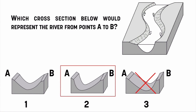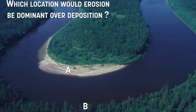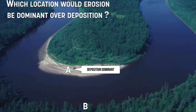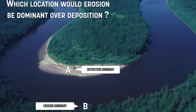Choice two is correct. There's more erosion going on at A, so that side has a much steeper channel. There's more deposition going on closer to B, so you have a much more gradual rise from deposited material. In the next example, erosion is more dominant at B because it's on the outside of the curve and the water has to travel faster to keep up with the inner part of the curve. At A, deposition is dominant — it's on the inside of the curve, and you can even see the sediment deposited there like a beach.